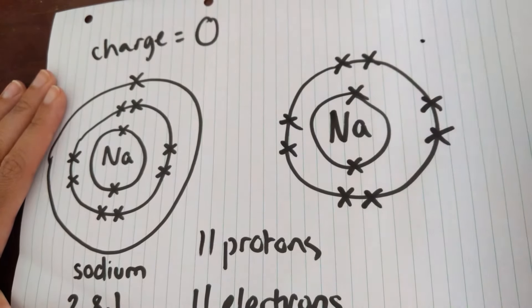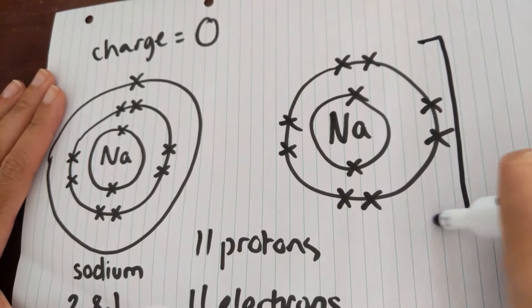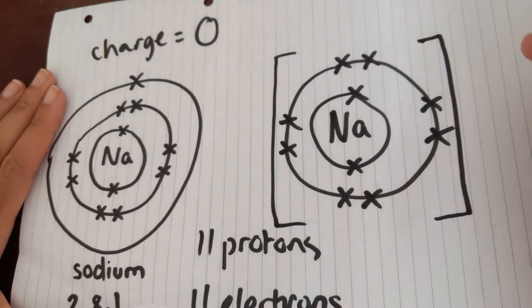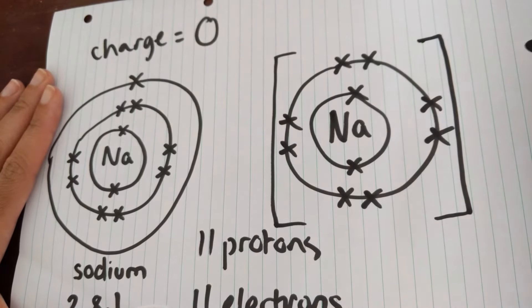So what we do when we're drawing an ion is we then put square brackets around it to represent that something has happened to the atom. And then we're going to put the charge here at the top right. So that's like a superscript.